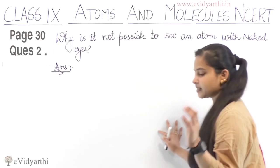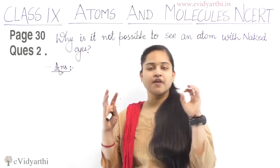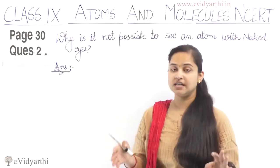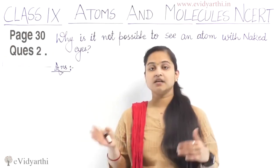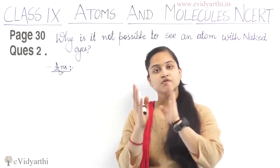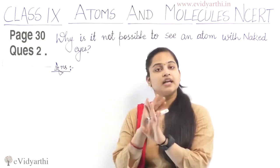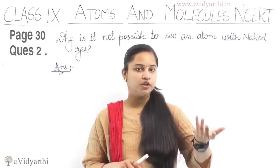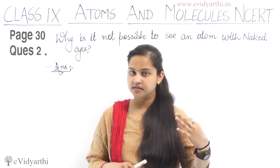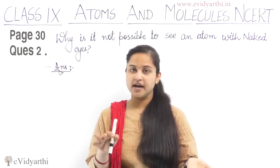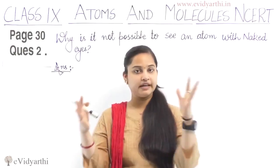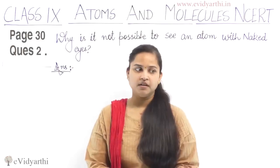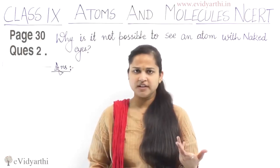The size of atoms is very, very small — so small that we cannot see them with our naked eyes. Also, atoms of most elements cannot exist independently; they form molecules or ions. These molecules or ions aggregate together in a large number to form matter, which we can see, feel, and touch.